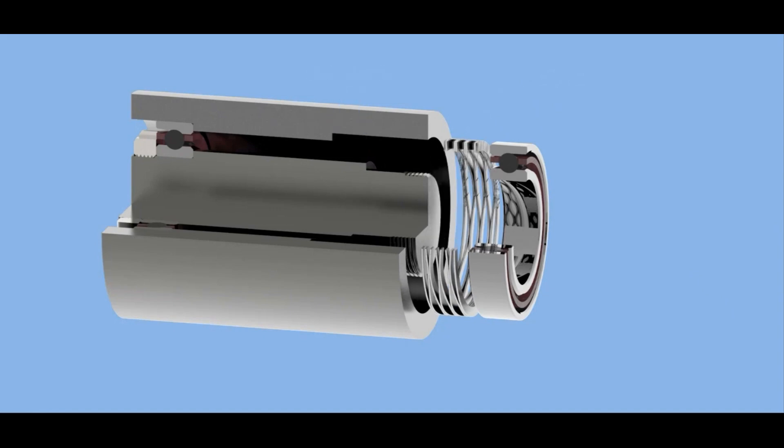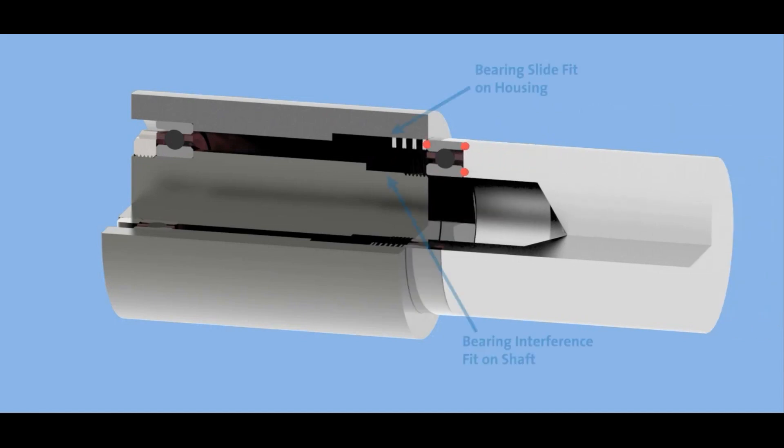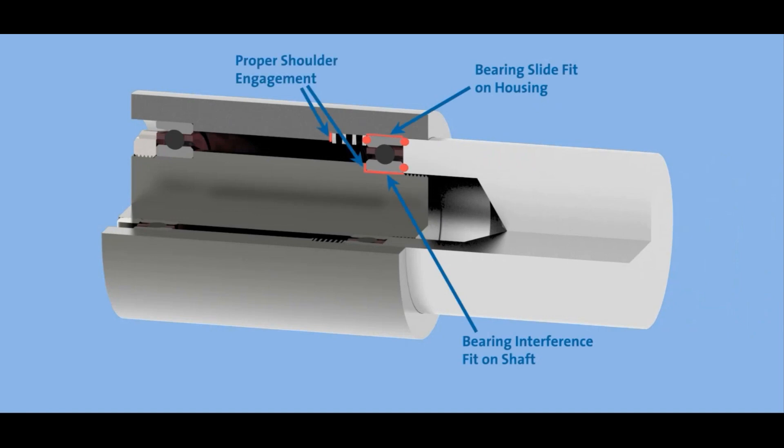And then we can use the same installation tool to push that bearing, supporting both inner and outer ring with that smooth, constant motion until the bearing is properly seated. Again, supporting that left bearing on both rings.